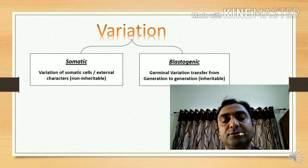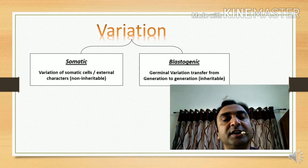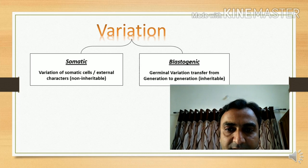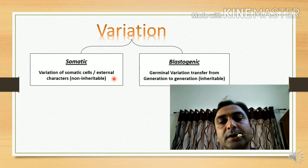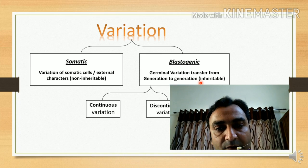The second type is blastogenic. The cells which are germ cells — if variation comes into germ cells, then it is said to be germinal variation, which is definitely transferred from one generation to the other. It is called inheritable variation. So there are two types of variation: one is somatic, which is generally external and non-inheritable; second is blastogenic, which is related to germinal cells and is inheritable in nature.